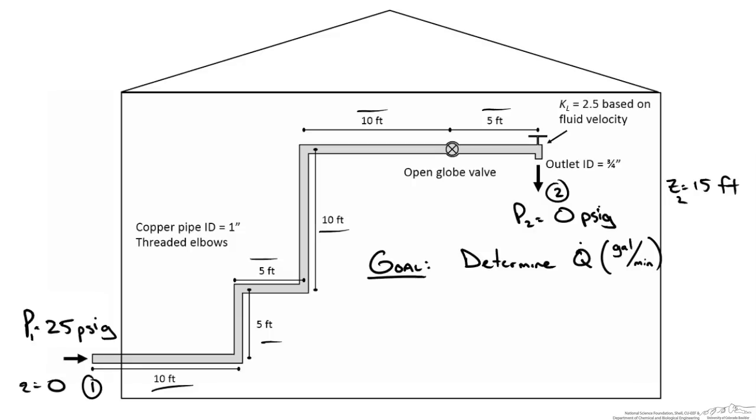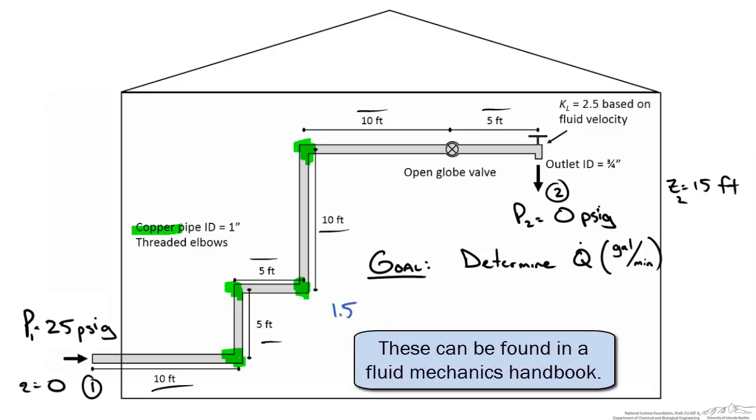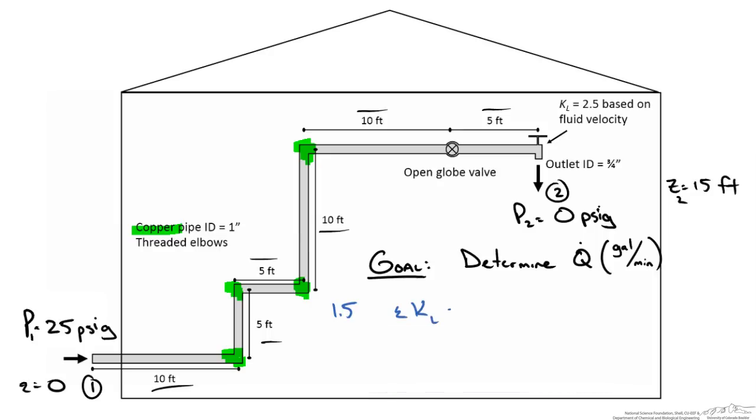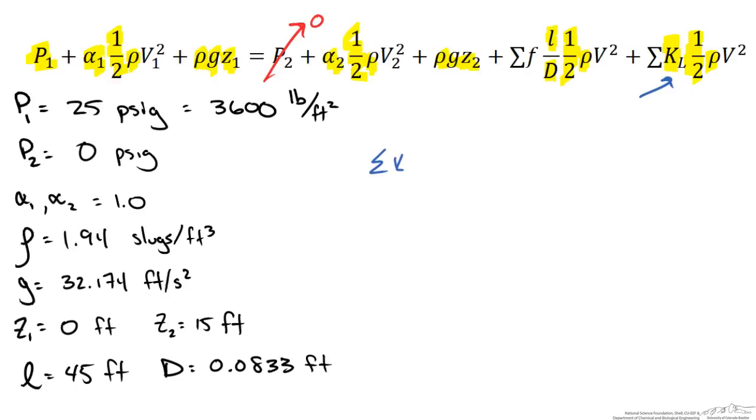So we have threaded elbows and we have 4 elbows for our pipe system. So we are going to have to look up the loss coefficient for a threaded elbow. We are also told that it is copper pipe. Now if you look up the loss coefficient for threaded elbows you get 1.5. So our KL for the threaded elbows is 4 times 1.5 which gives us 6. We also have a loss coefficient associated with this open globe valve. If you look this up you get a KL of 10. Then lastly we are told that the loss coefficient for our valve at the end is 2.5. So now we have the loss coefficients for our pipe network and calculate the sum of the minor loss coefficients. So the sum was equal to 18.5.